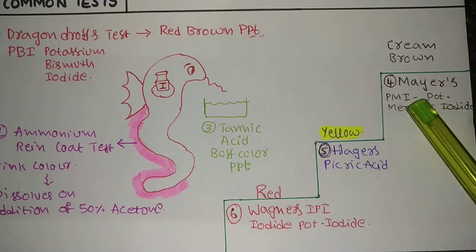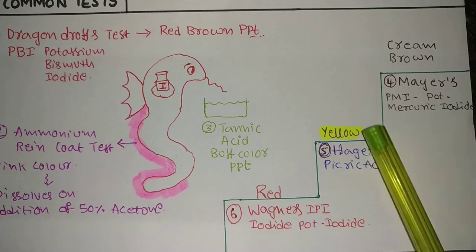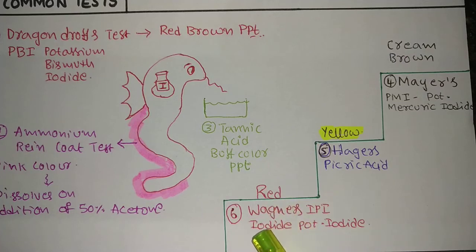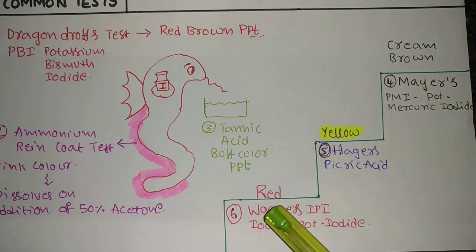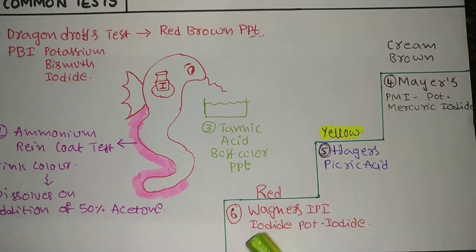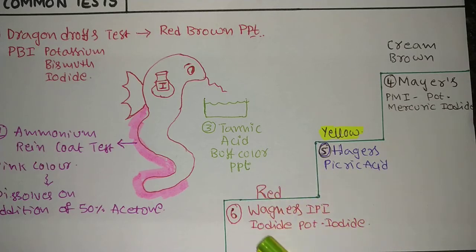The fifth test is Hager's test — the reagent is picric acid, which all students know is yellow in color, so you get a yellow precipitate. The sixth test is Wagner's test — notice that M (Mayer's) and W (Wagner's) are reverse letters. Wagner's gives a red color precipitate. The Wagner's reagent is IPI — Iodine Potassium Iodide.